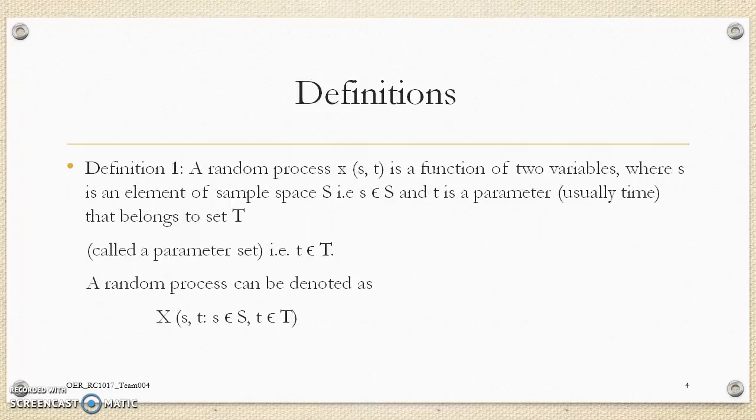That is, time instance T is subset of time period. A random process can be denoted as X(S,T), S is subset of sample space, T is subset of time period.